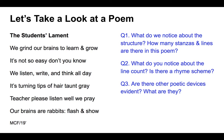As long as two words start with the same consonant sound within a line, it demonstrates alliteration. Then 'teacher please listen well we pray' — we've got 'well' and 'we,' both starting with W, so that's another example of alliteration. 'Our brains are rabbits flash and show' — is there a comparison? It doesn't use like or as, so it's not a simile. It's a direct metaphoric comparison saying the brain is a fast animal — the students are saying they're clever and can think quickly.